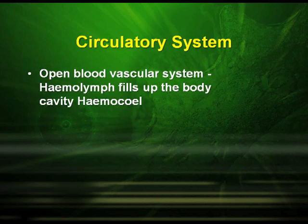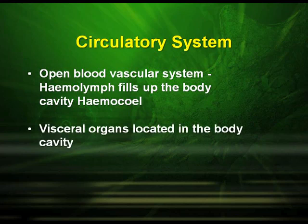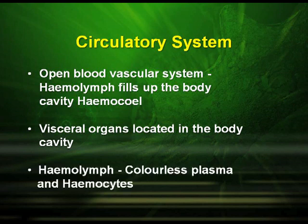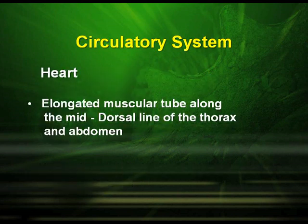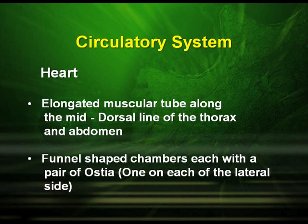In cockroach, they have an open blood vascular system. They have the hemolymph which fills up the body cavity, which is the hemocoel. The visceral organs are located in the body cavity and the hemolymph is made up of colorless plasma and hemocytes. Their heart is an elongated muscular tube which runs along the mid-dorsal line of the thorax and abdomen. They have funnel-shaped chambers, each with a pair of ostia, one on each of the lateral sides.